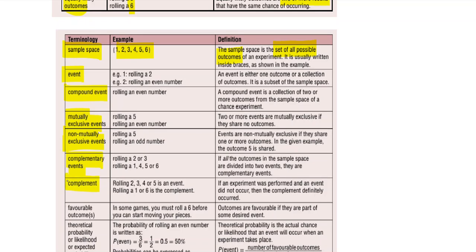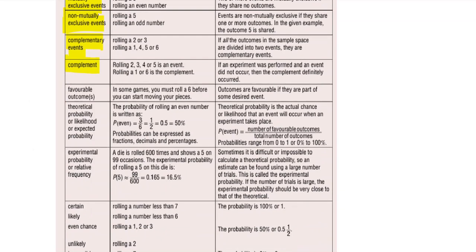Complementary events and a complement sound similar — what's the difference? The definition: if an experiment was performed and an event did not occur, then the complement definitely did occur. So if rolling a two, three, four, or five did not occur, that means either a one or a six did occur — that's the complement.